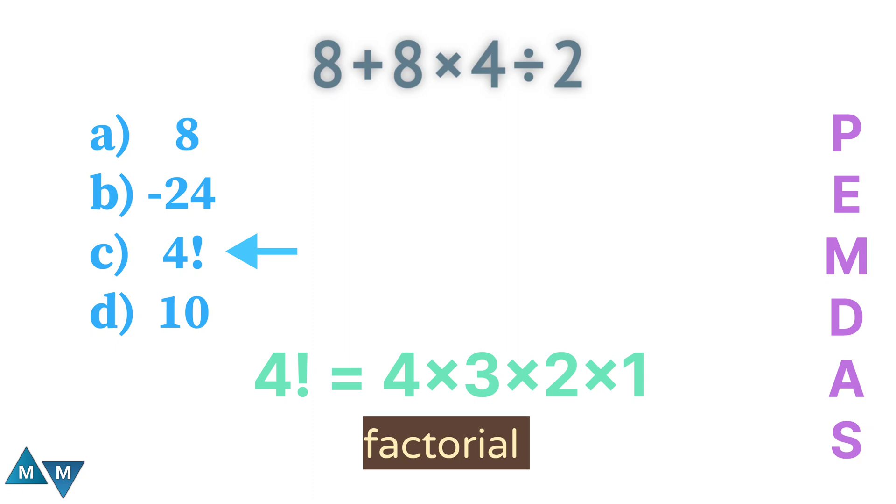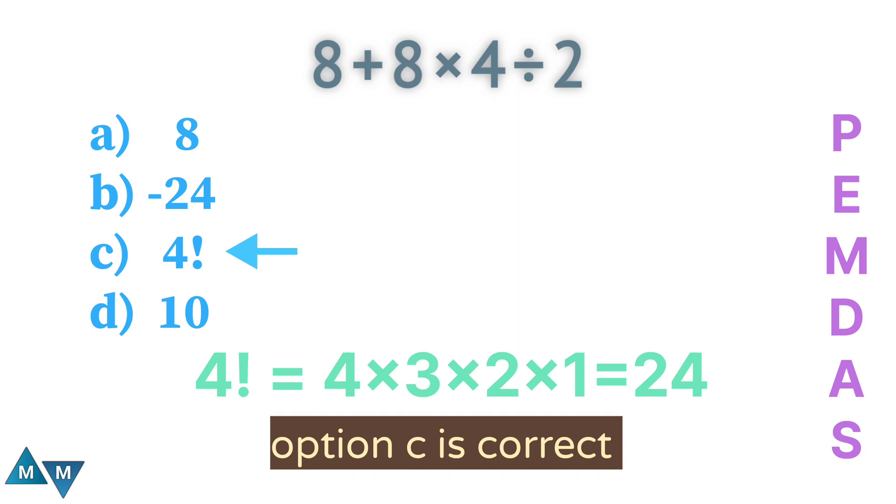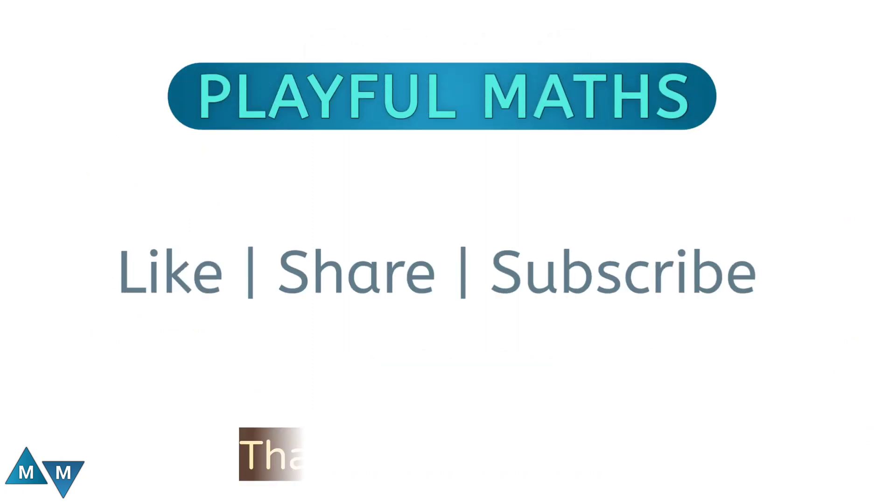On multiplying the numbers, this will give 24. So option C will be our final answer. Hope you understand it well. Thanks for watching.